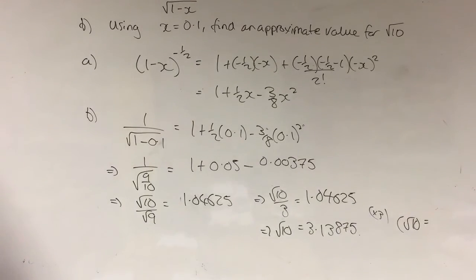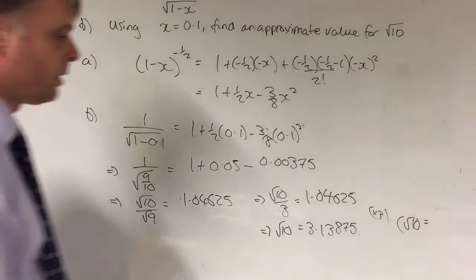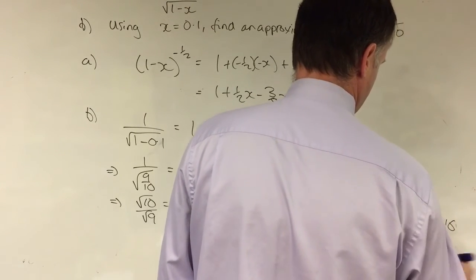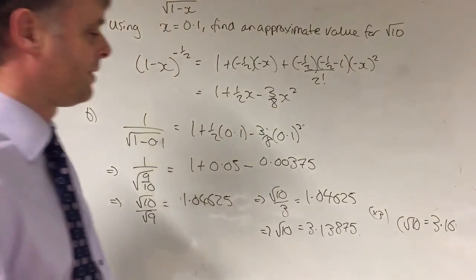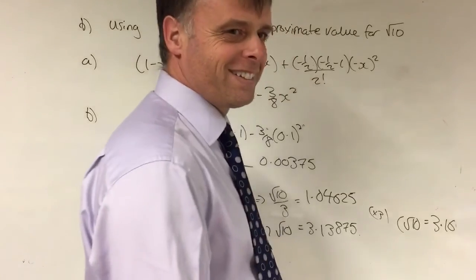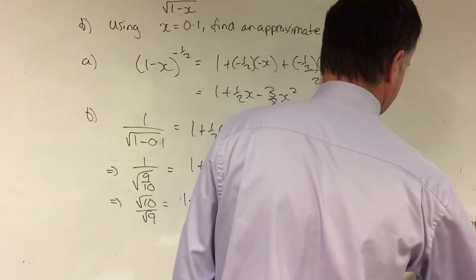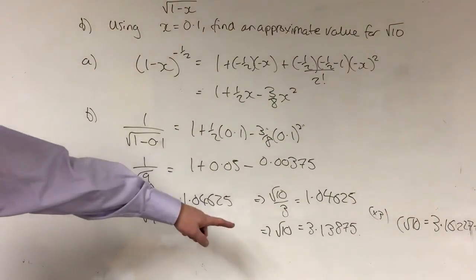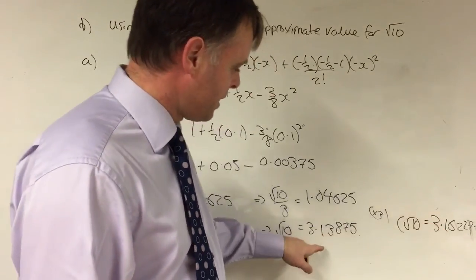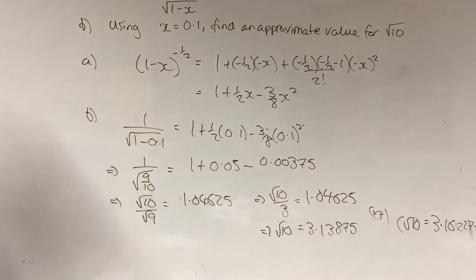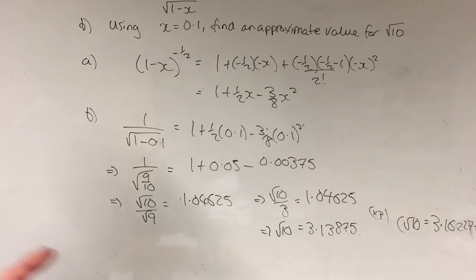The question doesn't ask us to work out how accurate that is, but just for the sake of it, what is the actual decimal value of the square root of 10, to see how close we are? The actual value is 3.16227... So comparing the two, it's only about 0.03 away. As a percentage error, it's probably about 1% — quite accurate. They used to do this when they didn't have calculators: a way of calculating square roots of numbers using fractions.